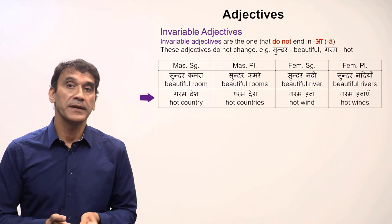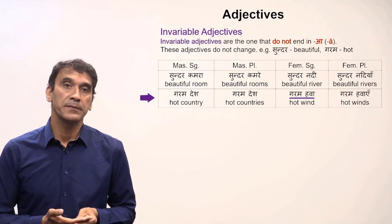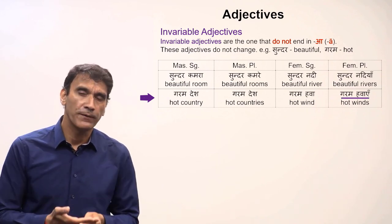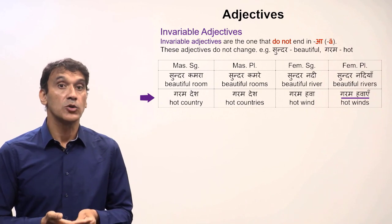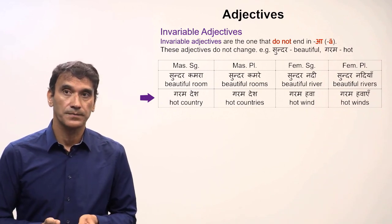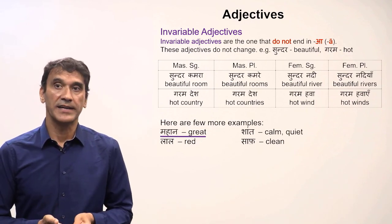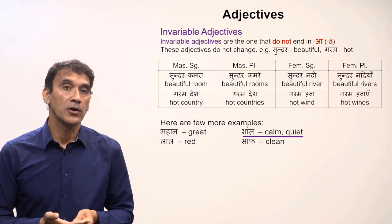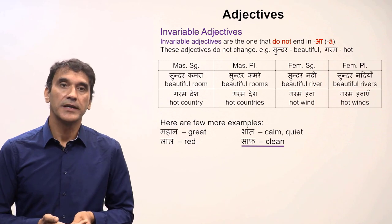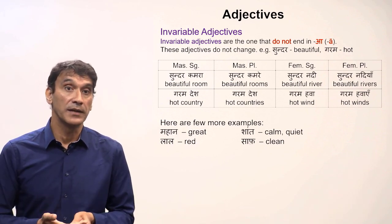For feminine: 'garam hawa' (hot wind) — the noun 'hawa' is feminine, but the adjective stays the same. And 'garam hawaaein' (hot winds) — the plural form. Again, 'garam' stays the same in all forms. Here are a few more examples of invariable adjectives: 'mahan' (great), 'shant' (calm/quiet), 'lal' (red). None of these adjectives have the ending -a, so they are invariable and do not change at all.